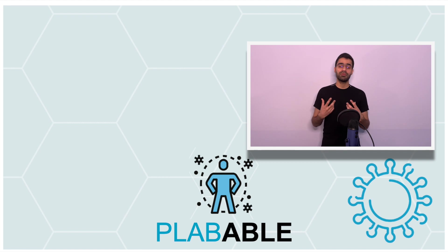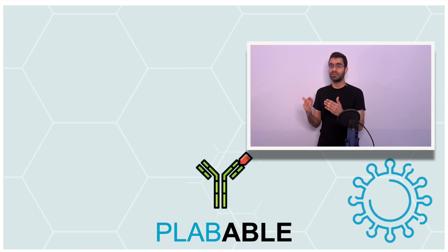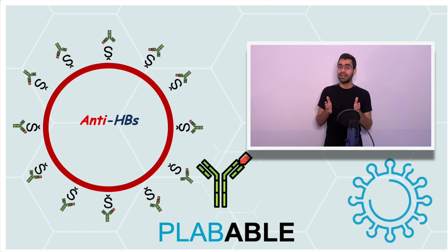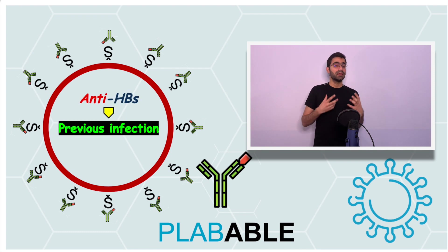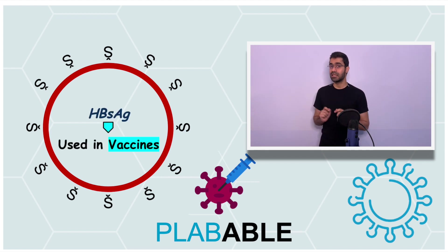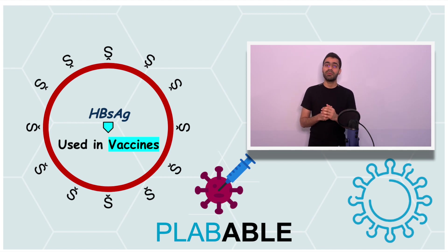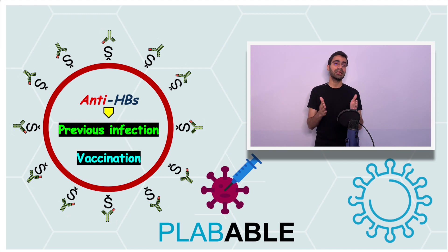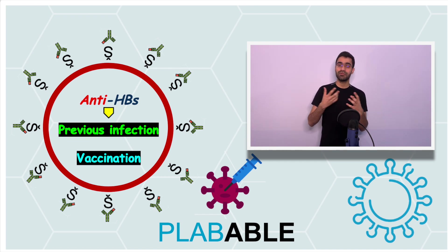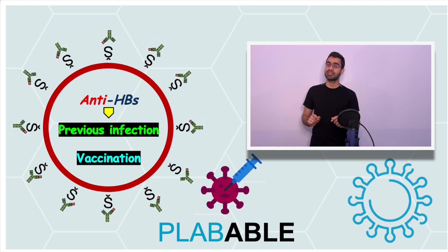As a body's immune mechanism, the body produces antibodies to HBsAg, that is anti-HBs. Anti-HBs persist for life and indicate recovery from an infection. HBsAg is also used in making vaccines, so a person who has received vaccination will also have anti-HBs. How we differentiate between anti-HBs due to recovery versus vaccination, we'll discuss shortly.